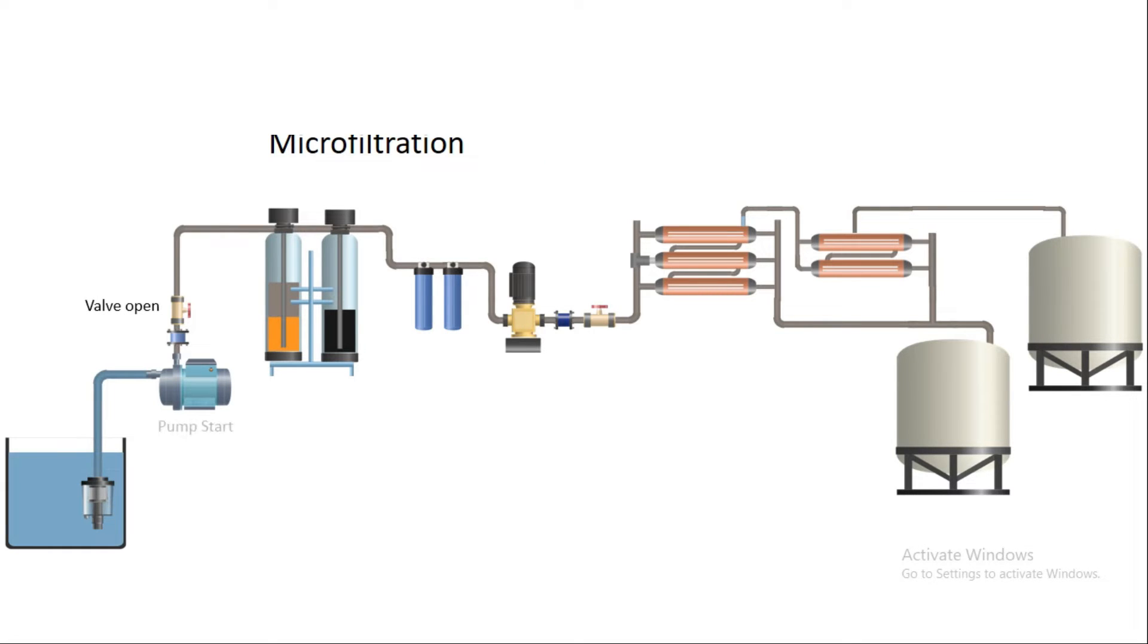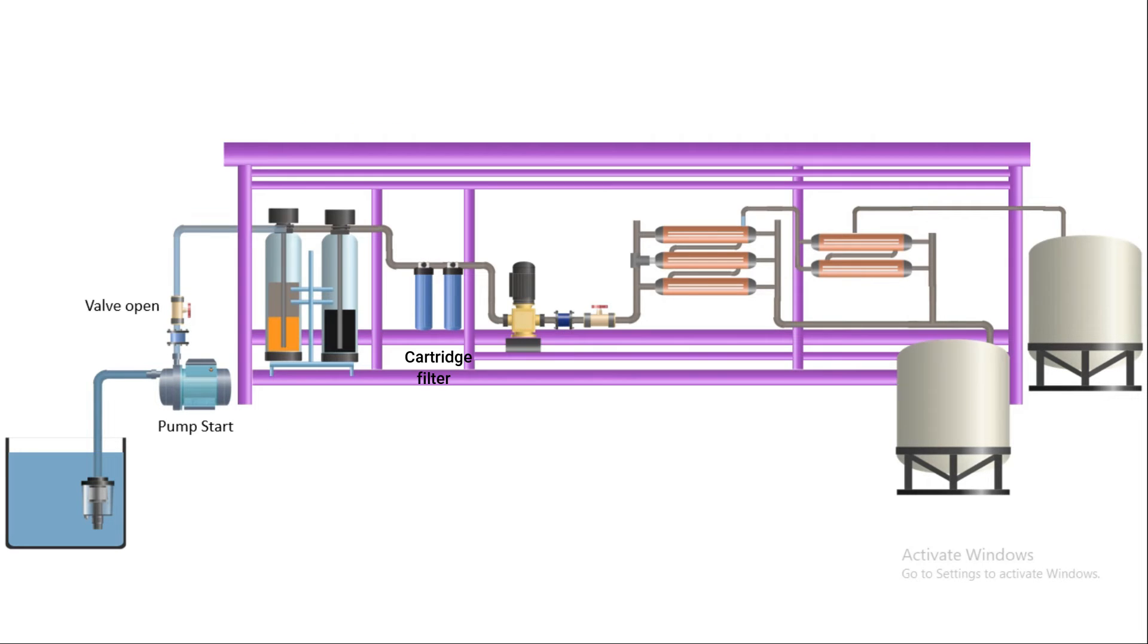Once large suspended particles are removed, the remaining water is fed into the cartridge filter. It has an absolute pore size of less than 10 microns. The primary purpose of using this pore size is to ensure that particles larger than 10 microns are removed before entering the RO membranes.